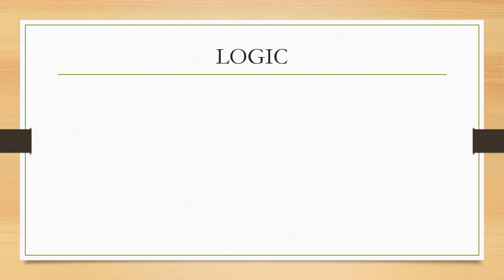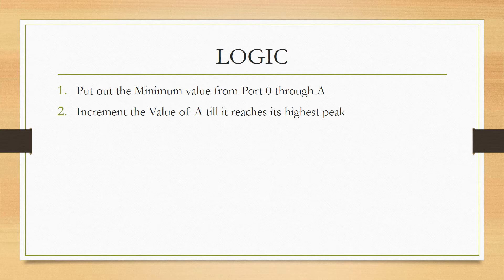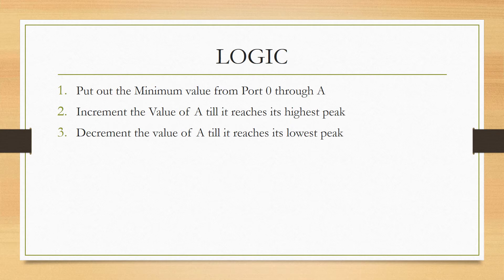Now let us understand the logic behind writing this code. First, I will put out the minimum value from Port 0 using the accumulator register. After that, I am going to increment the value of the accumulator and put it out through Port 0. This process will continue until the accumulator reaches the highest peak value, that is FFH. Once the highest value is reached, I will decrement the value of the accumulator until it reaches its lowest peak, that is 00. Every time I either increment or decrement it, I am going to put it out through Port 0.